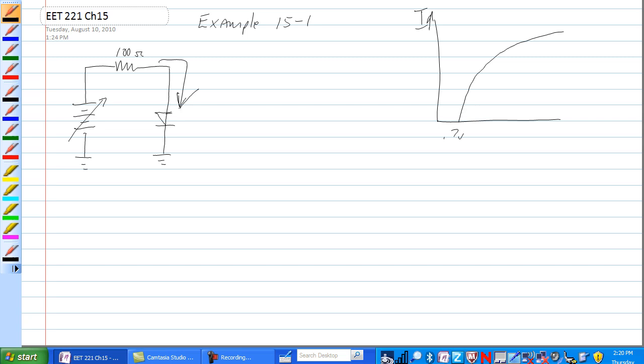In this case, the circuit has a voltage, a variable voltage source, and a 100 ohm resistor.